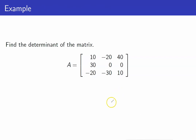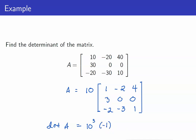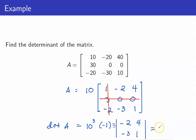Let us evaluate the determinant of a given matrix A. Take note that A is equal to 10 times another matrix. So therefore, the determinant of A is equal to 10 raised to 3 times the determinant of that matrix. To get the determinant of that inner matrix, I will use cofactor expansion along the second row because it has exactly one non-zero entry. We get negative 1 times the determinant of the resulting submatrix. Therefore, this equals negative 100 times negative 2 plus 12, which is 10, giving us negative 3,000.